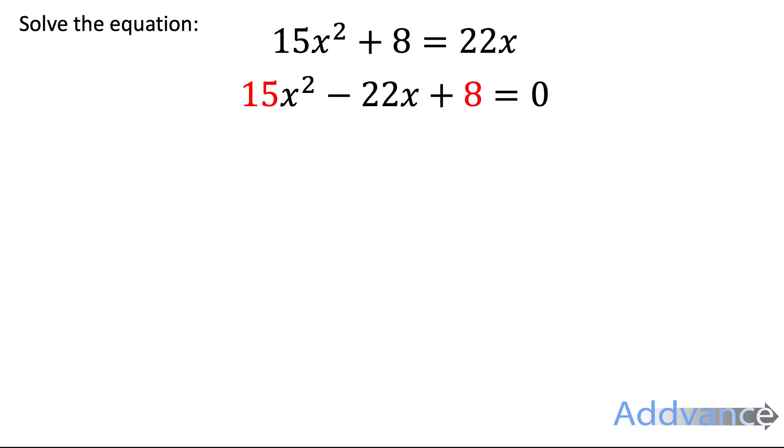Now, as before, we take the first and last numbers. We multiply them. 15 times 8 is 120. We're looking for two numbers that add to make minus 22 and multiply to make 120. Can you think of what those numbers may be? You should have got minus 12 and minus 10 that add to make minus 22 and multiply to make 120.